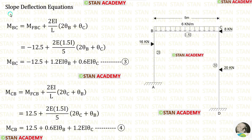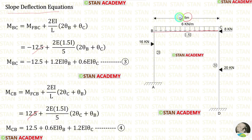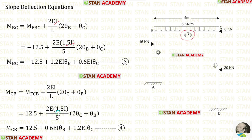Now let us make the slope deflection equations in beam BC. Applying the fixed end moments, L = 5, and moment of inertia 1.5I, we obtain two equations.